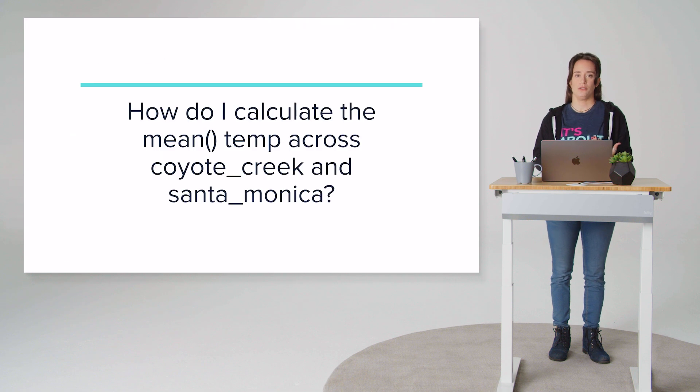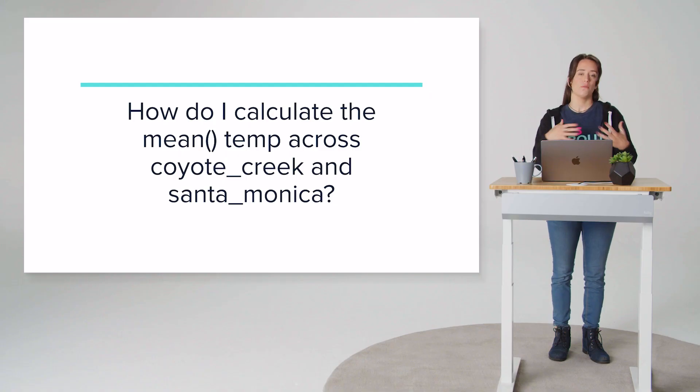And the question we want to answer today is how do I calculate the mean across Coyote Creek and Santa Monica? Because as we know, the way that Flux operates is that you're constantly pipe forwarding the output of one function into another function. And that happens on a per table basis. So for example, if I just query all my data from the average temperature measurement, and then I simply then pipe forward that data, which has one result with two tables in it, one for Coyote Creek and one for Santa Monica, and then I were to apply a mean function, I'm saying apply that mean function to every table in that result stream. But if I want the mean temperature across both of those tags, I need to do some grouping. I need to reshape my data.